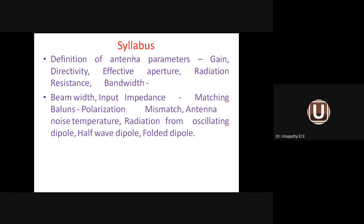Under Unit 1, starting with the definition of antenna parameters, we saw various antenna parameters in the previous classes: radiation pattern, radiation density, radiation intensity, gain, directivity, relation between gain and directivity, effective aperture, radiation resistance, bandwidth, beam width, input impedance, polarization, polarization mismatch, antenna noise temperature, and matching balun.